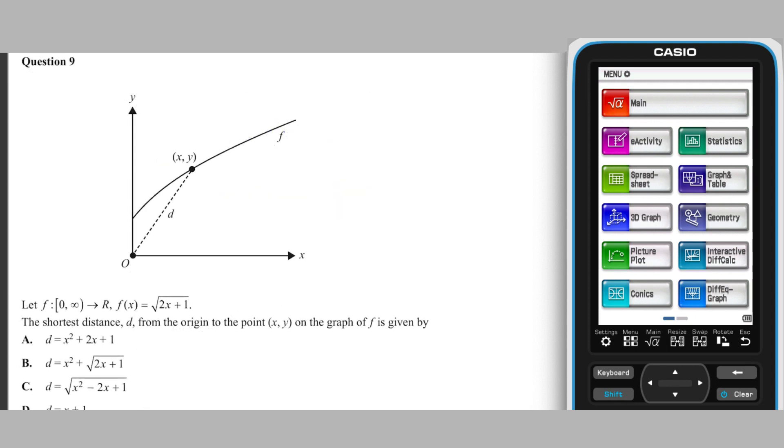Question 9 asks the shortest distance between the origin and a point on a function x comma y, i.e. the distance between the points 0, 0 and x comma root 2x plus 1. An expression for this distance can be found on a ClassPad by applying the distance formula to these points.